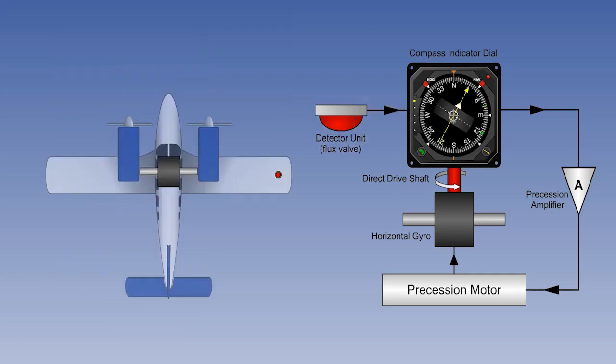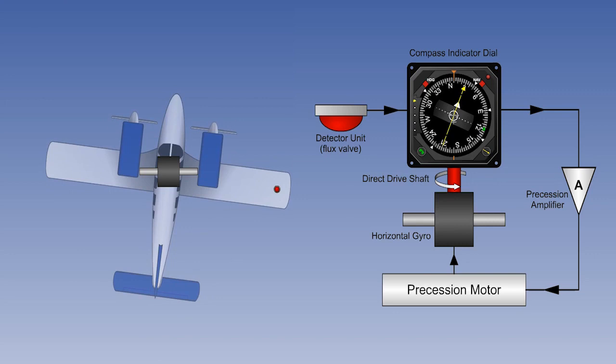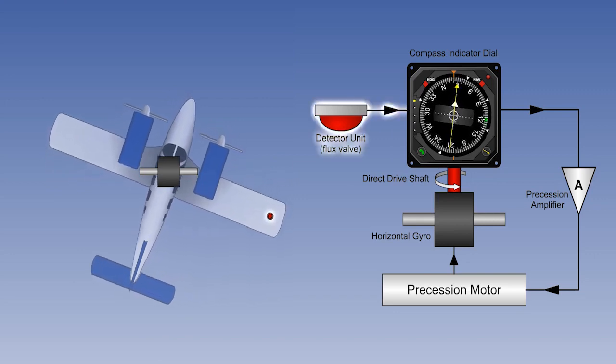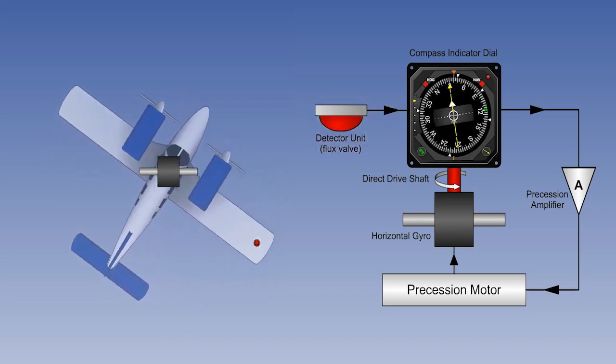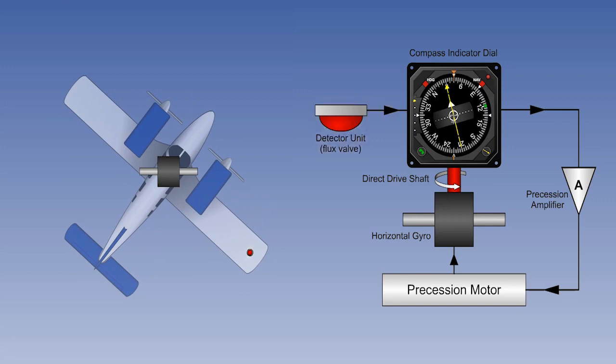However, at the same time, the heading sensed by the flux valve, which is being passed to the driveshaft for comparison, is changing at the same rate. Therefore, no error signal is generated, and the compass should remain synchronised during the turn.